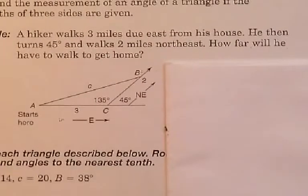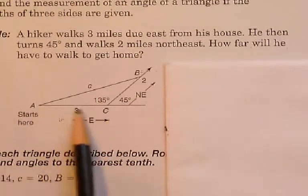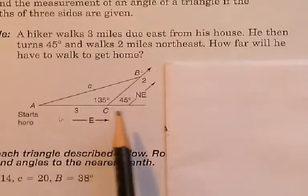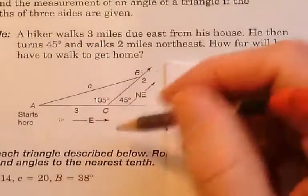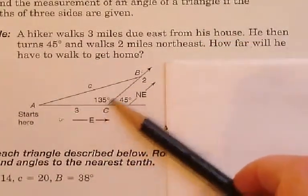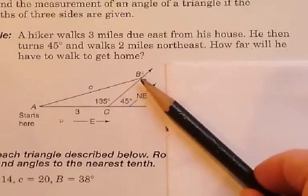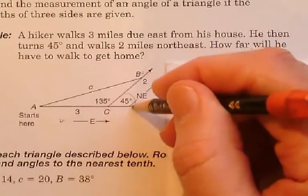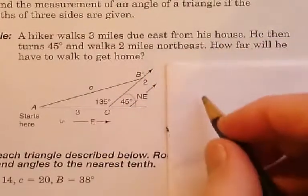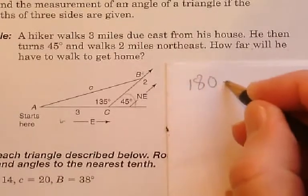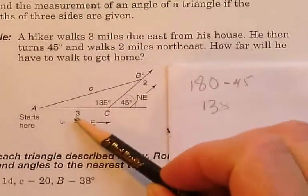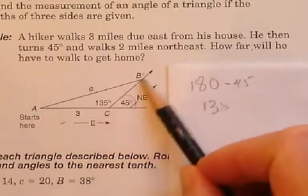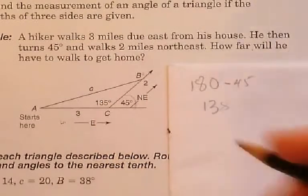A hiker walks three miles due east — so this is three miles due east. Then he turns forty-five degrees — so that's this angle right here — and he walks two miles northeast. This is forty-five on the outside of this triangle, which makes this one one-thirty-five. One-eighty minus forty-five is one-thirty-five. So the angle inside the triangle is one-thirty-five. Now we know these two sides of the triangle: this one's three, this one's two. The angle in between — that's side-angle-side. That means we can use the law of cosines.